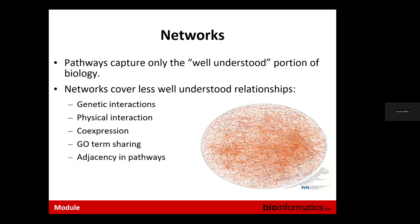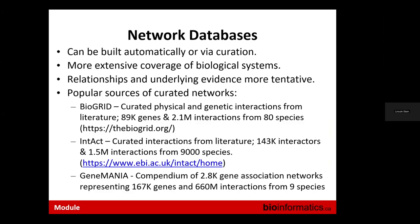Pathways capture only the well-understood portion of biology — things understood enough to get into the scientific literature. In particular, they don't capture high-throughput information like proteomic pull-down data, genetic interaction data, RNA co-expression data, and other relationships where we know there's some relationship between genes but don't know exactly what they are. Networks are more flexible and can cover less well-understood relationships including genetic interactions, physical interactions, co-expression, GO term sharing, and adjacency in pathways.